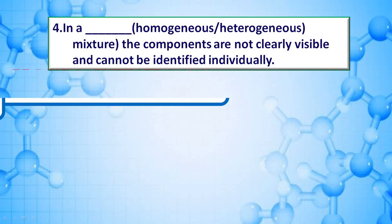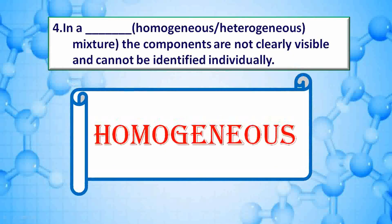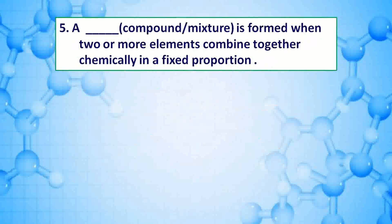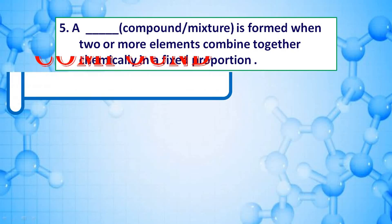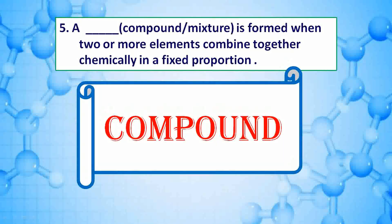Answer is homogeneous mixture. A blank is formed when two or more elements combine together chemically in a fixed proportion — answer is compound.